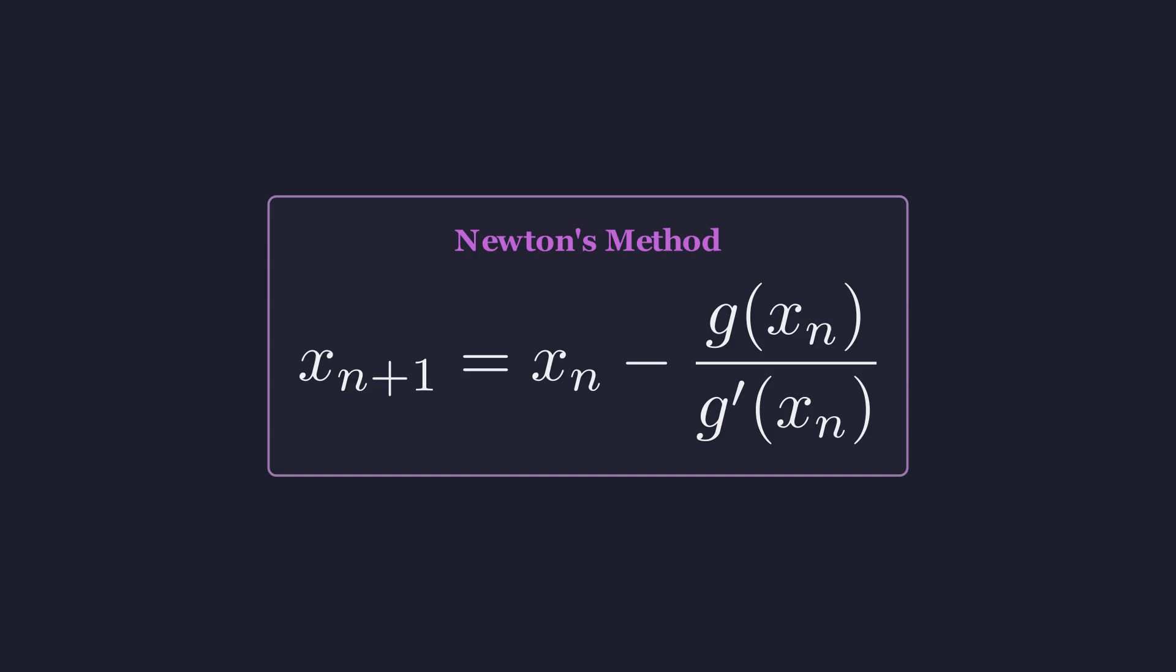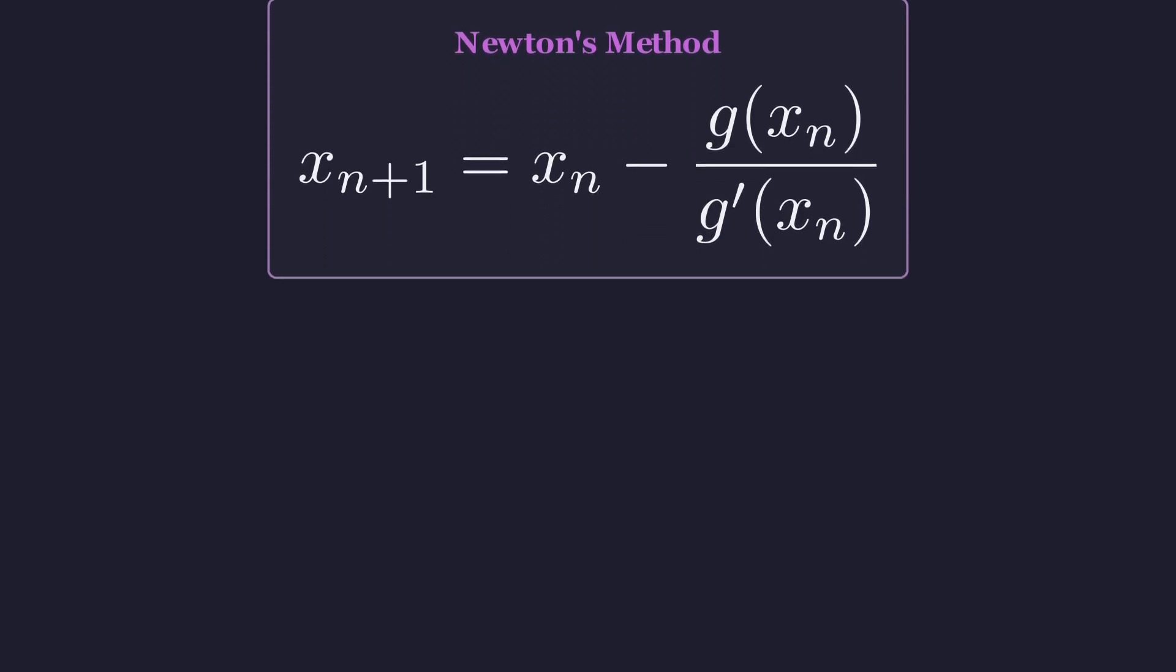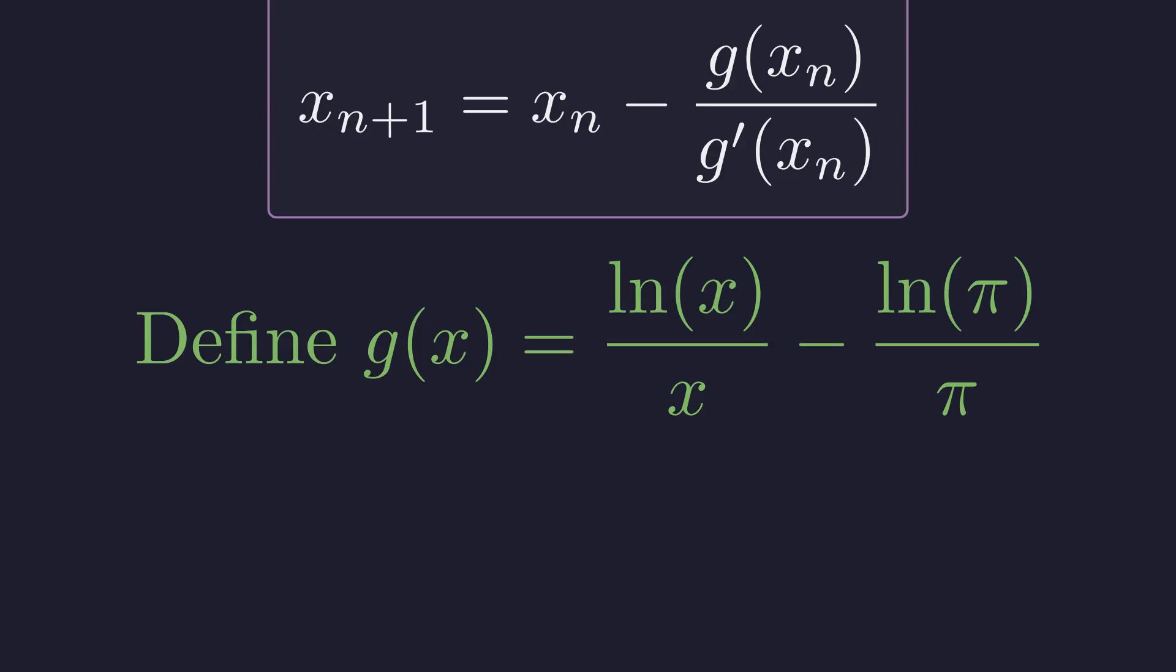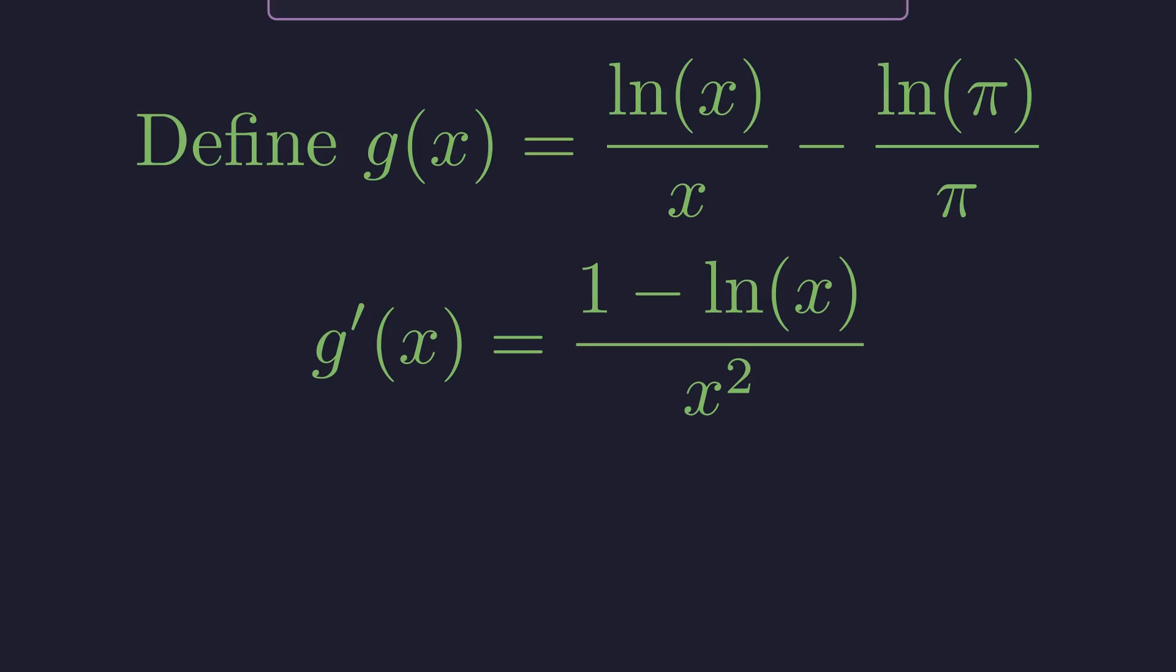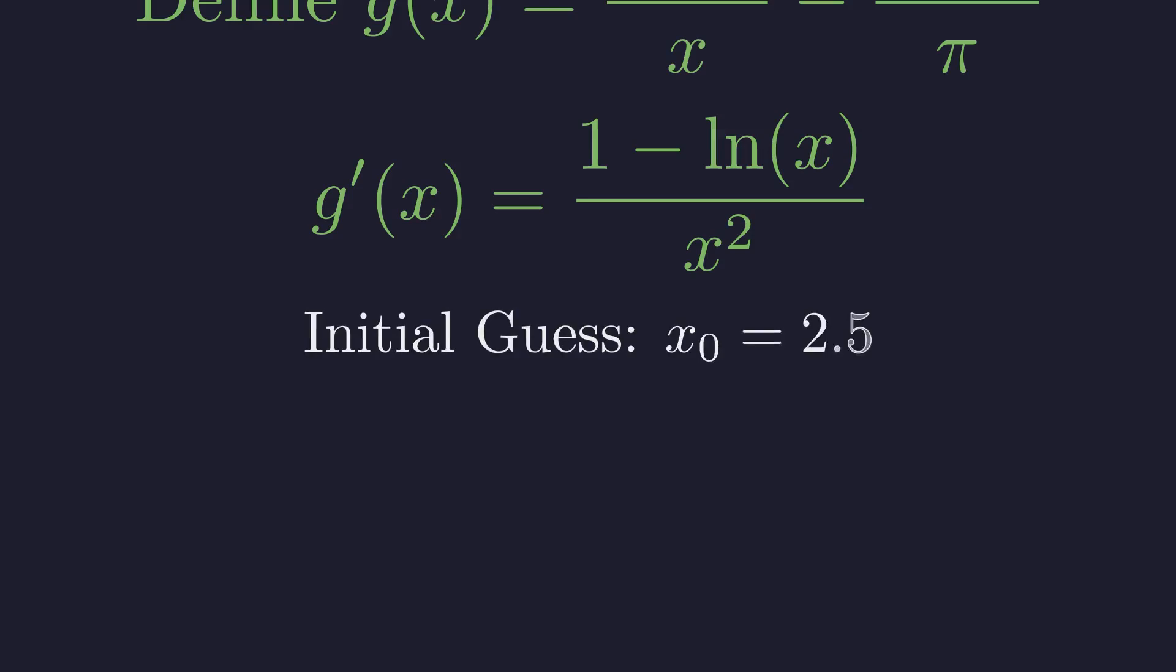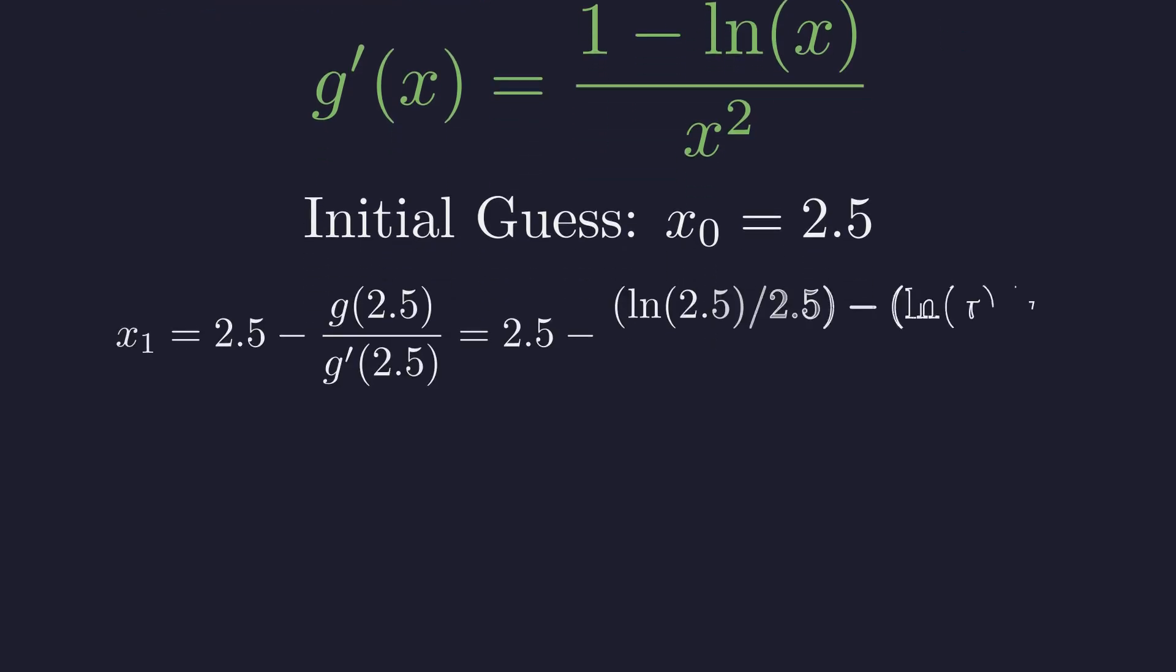First we define the function g of x as the natural log of x over x minus the natural log of π over π. We're looking for where g of x equals zero. The derivative of g is the same as the derivative of f that we calculated earlier: (1 - ln(x)) all divided by x². We'll need this for Newton's method. From our graph, the root looks like it's near 2.5. Let's start there. We'll call this our initial guess, x₀. Now we apply the formula.